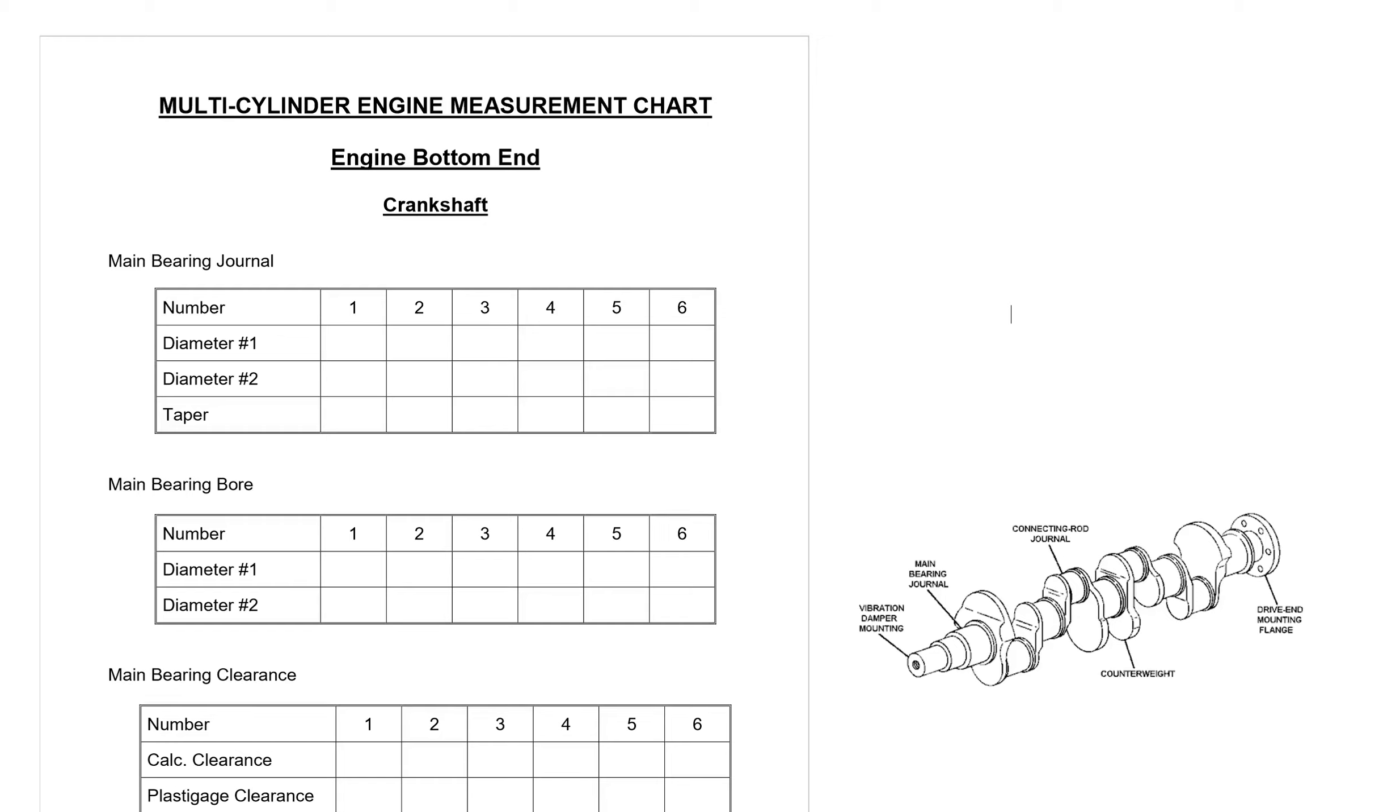This is Mech 23B and we're talking about engine measurement. We're going to start on the engine bottom end. First thing we're going to look at is the main bearing journal.